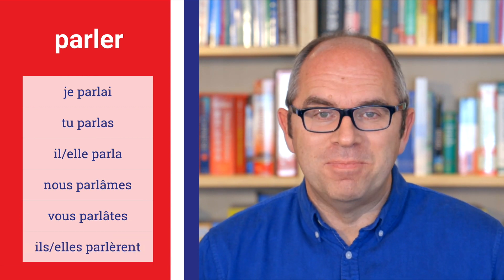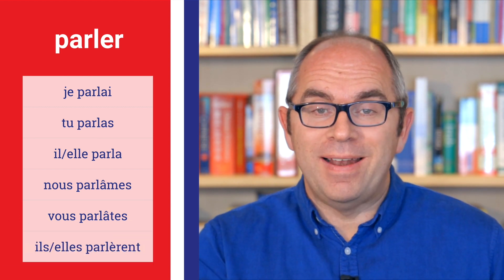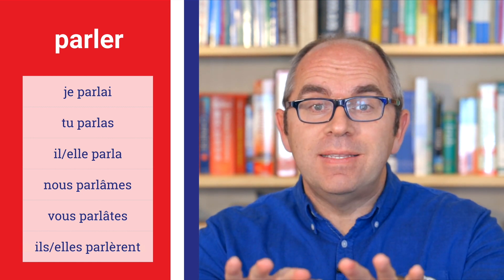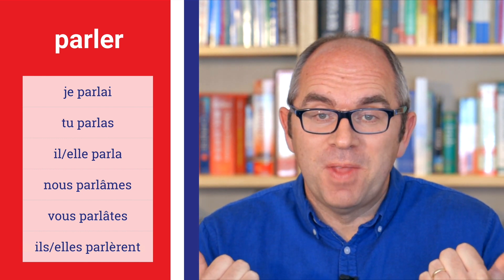We're going to look at three regular verbs in the past historic: an -er verb, an -ir verb, and an -re verb. Let's start with parler. Je parlai, tu parla, il parla, elle parla, nous parlâmes, vous parlâtes, ils parlèrent, elles parlèrent. So that's an -er verb in the past historic.